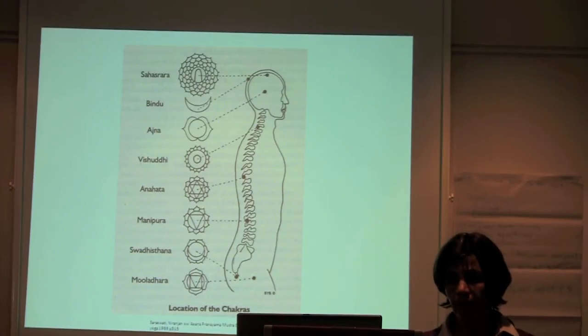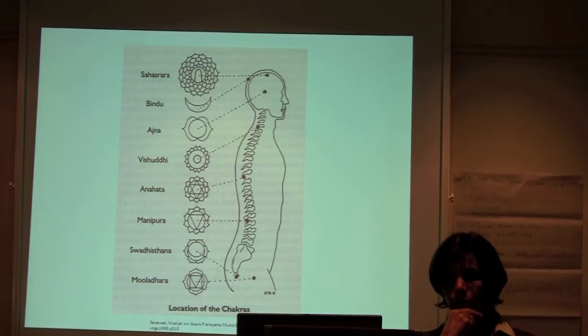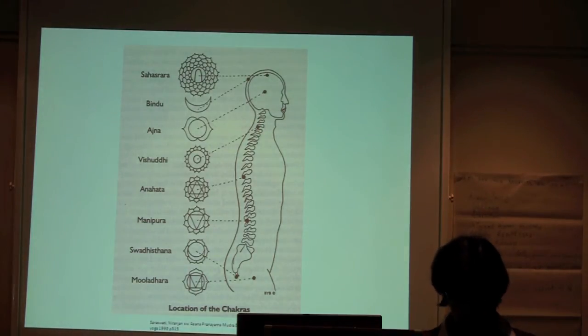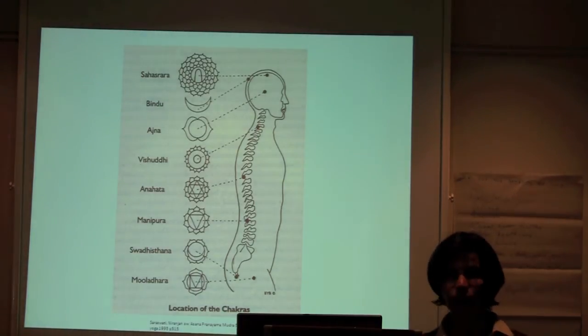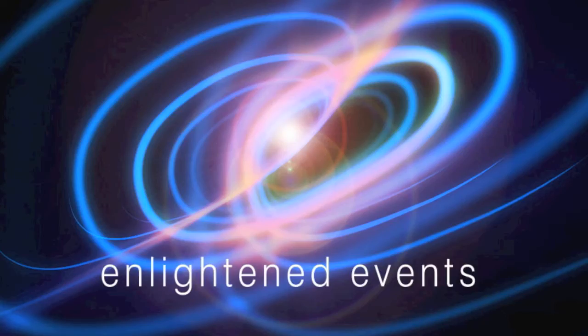The chakras are again areas of energy that we can use during breast cancer treatment. The two I found most powerful in breast cancer are Manipur, our centre of power and courage, and Anahat, our sense of love, compassion for ourselves and others. This is a little practice with Anahat and Manipur.